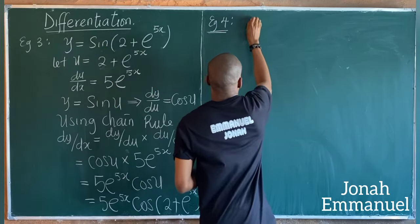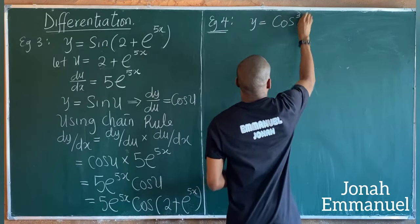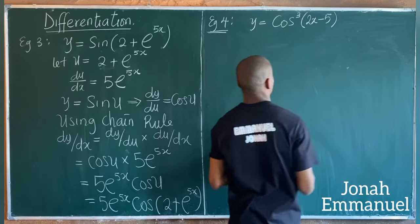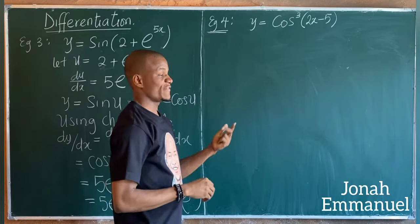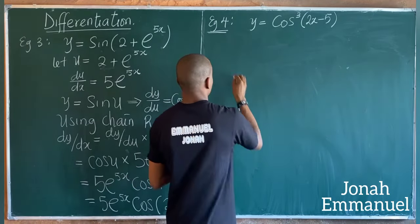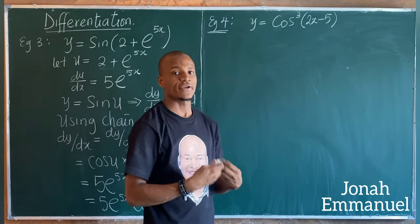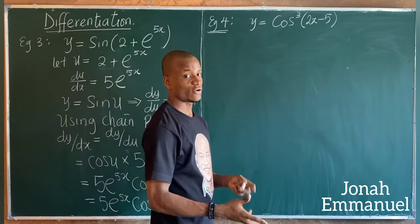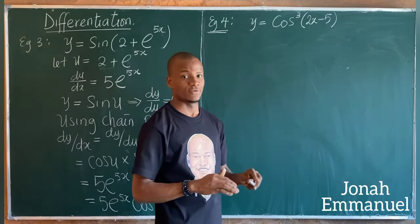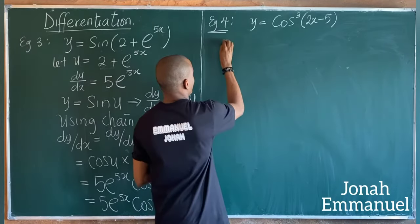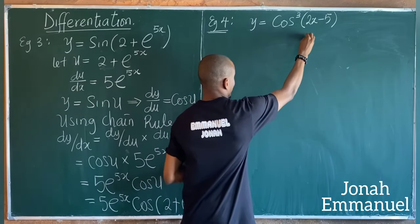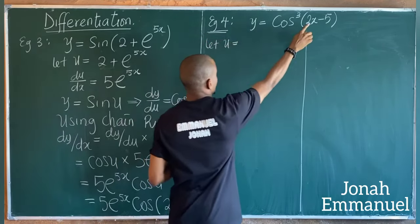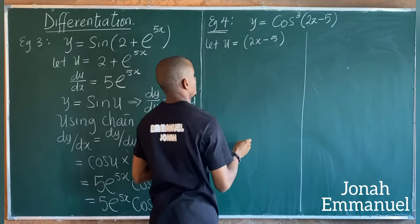One last example. Example four: what if we have y = cos³(2x - 5)? I'm asked to differentiate this. Chain rule is called 'function of a function' or 'function of several functions.' Here, I need to break down each level to the minimum. Let u be equal to what's in the bracket: 2x - 5. Then du/dx = 2.